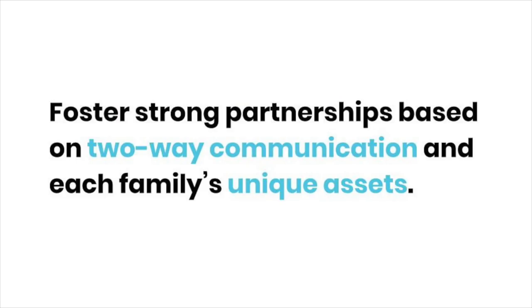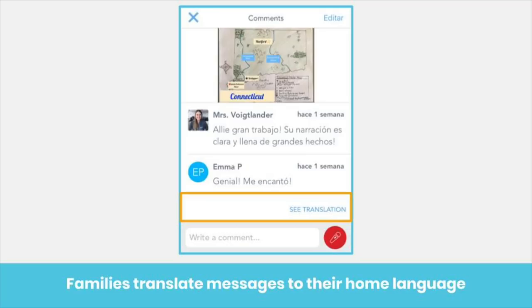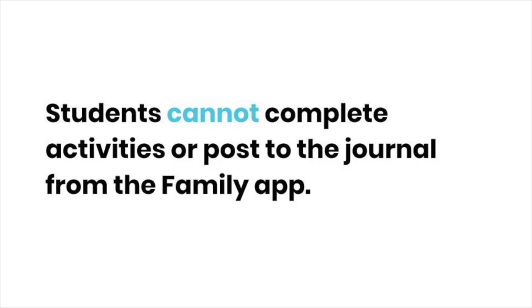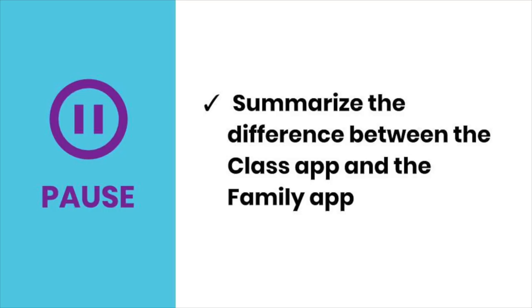Families see and reinforce what their child is learning at home, and teachers get to know each and every family in deeper ways. With translation tools, all families are able to engage. If a family member's device is set to a language other than English, they see the option to see translation — no more waiting for conferences or relying on translators to communicate with your families. Keep in mind that students cannot use the Family app to respond to activities or post to their journal; students must use the Class app to post to their journal. Pause the video and take a moment to jot down the key differences between the Class and the Family apps.